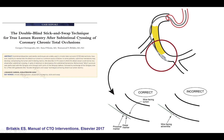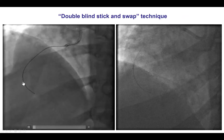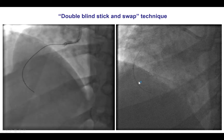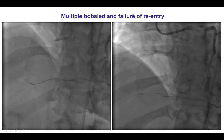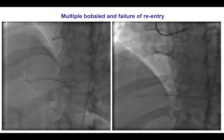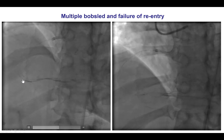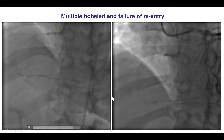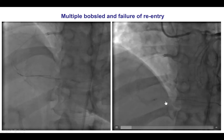We used the double blind stick and swap technique, in which the Stingray wire is advanced through both ports — the one between the two markers and the one proximal to the proximal marker — then removed, and a Pilot 200 is advanced to find the port connecting with the true lumen. We advanced the wire through both the proximal and between-marker ports, but were unable to enter the distal true lumen. We then used the bobsled technique, advancing the Stingray balloon further down to attempt re-entry at a different vessel location, but again could not enter, most likely due to subintimal hematoma formation.